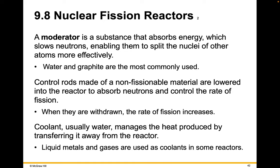A moderator is a substance that absorbs energy, which slows neutrons, enabling them to split the nuclei of other atoms more effectively. Water and graphite are the most commonly used moderators. Control rods, made of non-fissionable material, are lowered into the reactor to absorb neutrons and control the rate of fission; when they're withdrawn, the rate of fission increases. Coolant, usually water, manages the heat produced by transferring it away from the reactor. Heavy liquid metals and gases are used as coolants in some reactors.